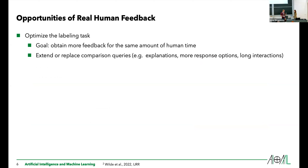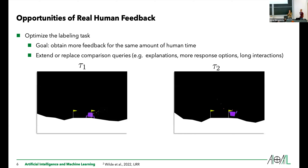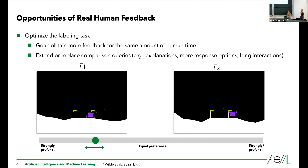While human feedback poses many challenges, the very same challenges can also be seen as an opportunity for research to further improve the reinforcement learning from human feedback method. One way to do so is to optimize the labeling task, collecting more feedback in the same amount of human time. To achieve this, we can extend the binary query setting — the status quo where labelers decide whether option A or option B is better. Extensions include a middle button for equally good options, or a slide bar for quasi-continuous and more nuanced feedback.